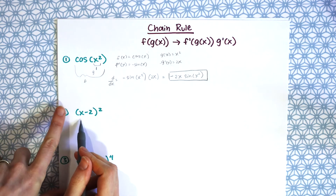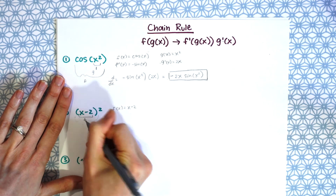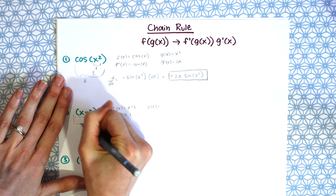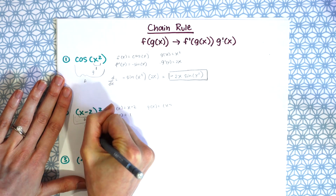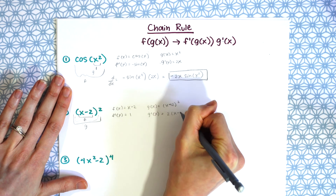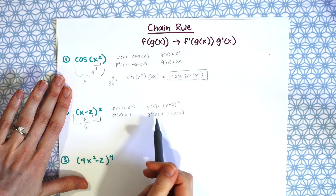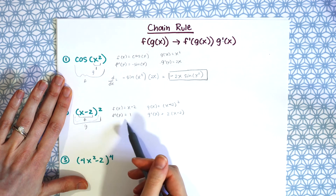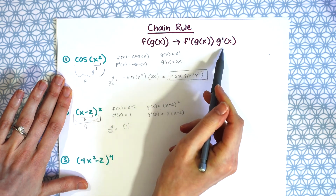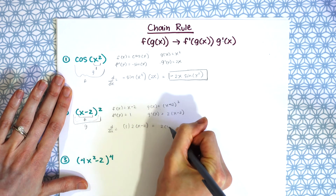For the second chain rule example, we have (x minus 2) squared. The inside f of x equals x minus 2 with f prime equals 1, and the outside g of x equals (x minus 2) squared with g prime equals 2 times (x minus 2). Applying the chain rule: f prime of g of x times g prime of x equals 1 times 2(x minus 2), so our answer is 2(x minus 2).